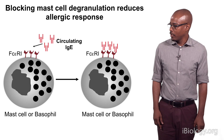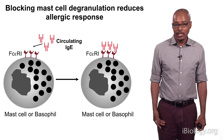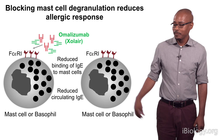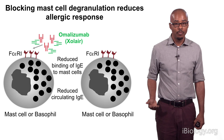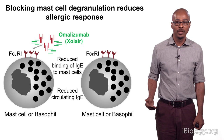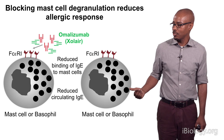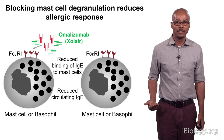Another drug recently discovered by Genentech is a drug that targets IgE and blocks it from interacting with its receptor. That drug is called Xolair, and it is an antibody that binds to the Fc portion of IgE and prevents it from interacting with its receptor. When it does so, the mast cells or basophils can no longer respond because they don't have IgE on their surface, they cannot recognize the allergen, and so you reduce the symptoms of allergic responses. Xolair has worked very well in reducing allergy symptoms because it reduces the ability of mast cells and basophils to respond.